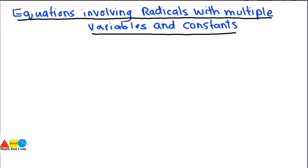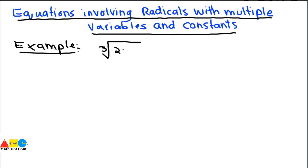The first example is: the cube root of (2x + 3) equals the cube root of (x - 2). As seen from the equation, the variable x is on both sides. So how do you solve such equations? Let's solve it out.